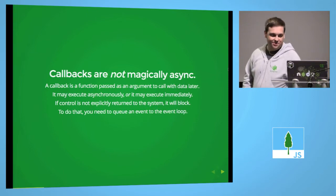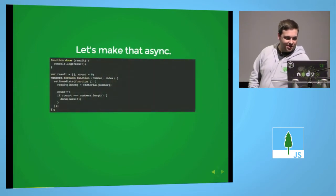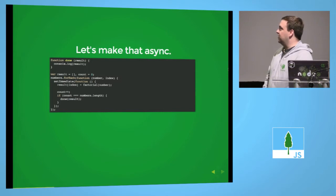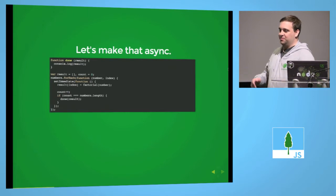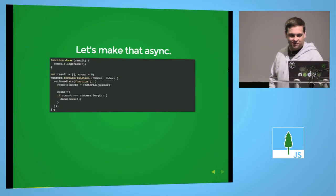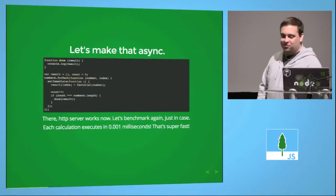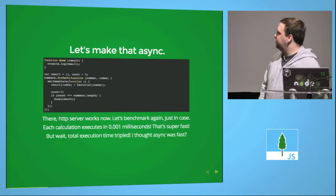So you need to use the event loop. Let's make that async. This is basically doing the same thing, but for each calculation it's using setImmediate, so all of them are calculated individually as individual events. My HTTP server works now, so everything's fine, right? My calculations are nice and speedy, but wait — my execution time tripled. That's not good.